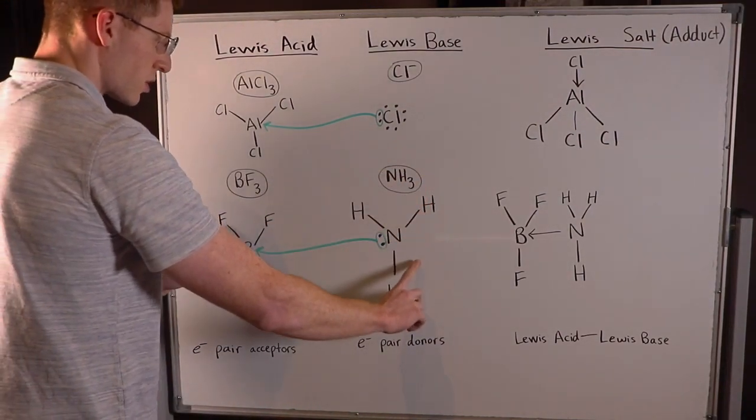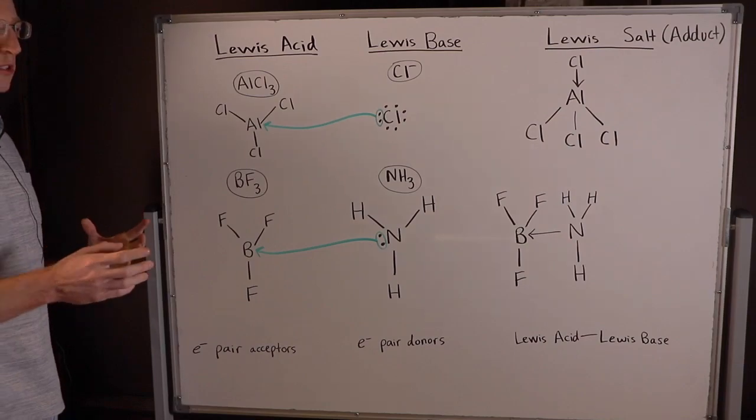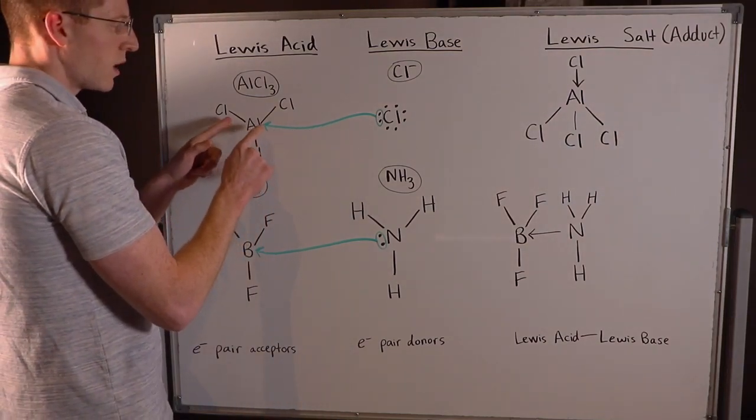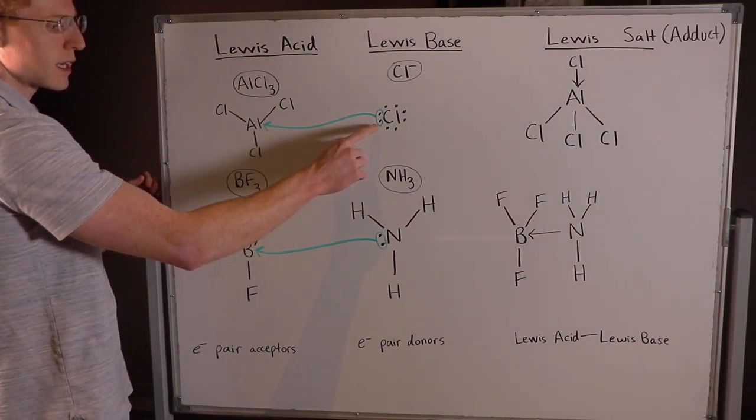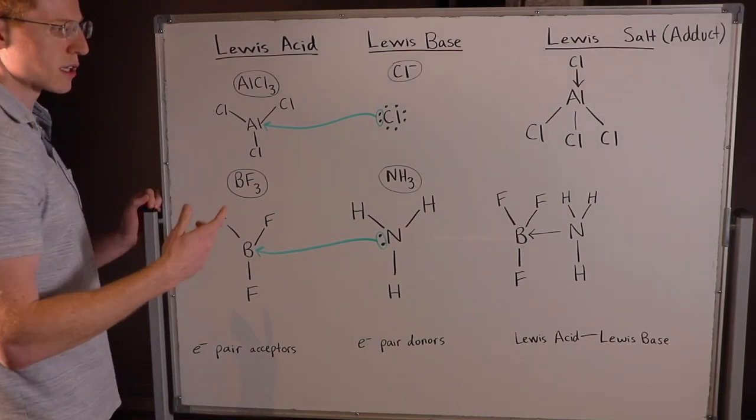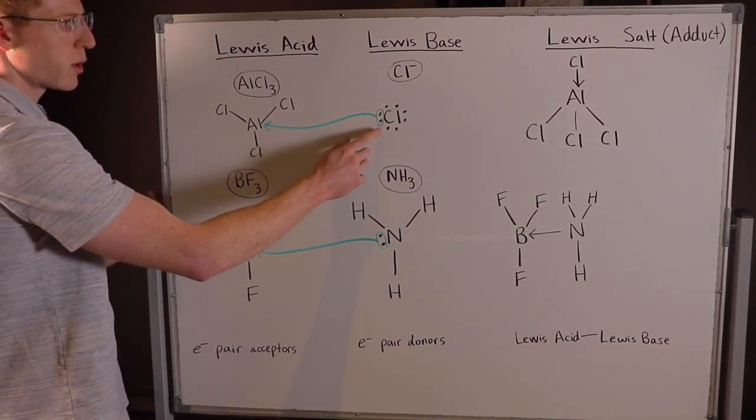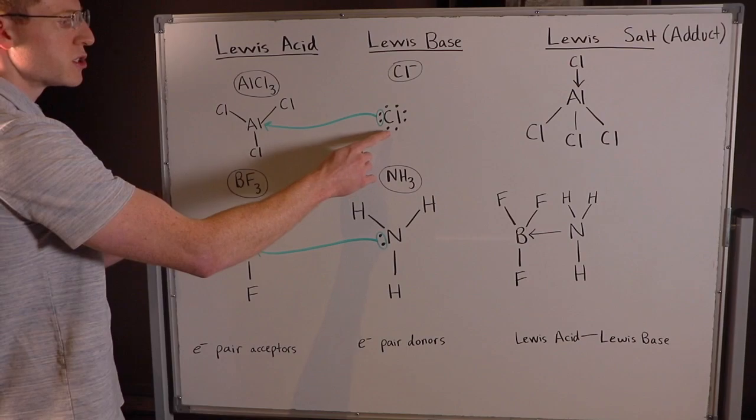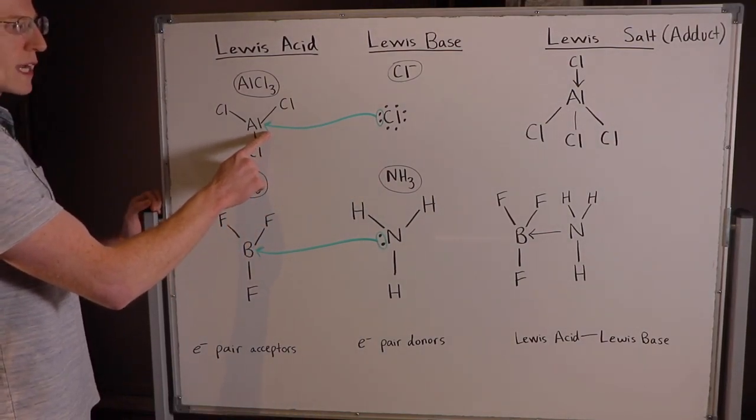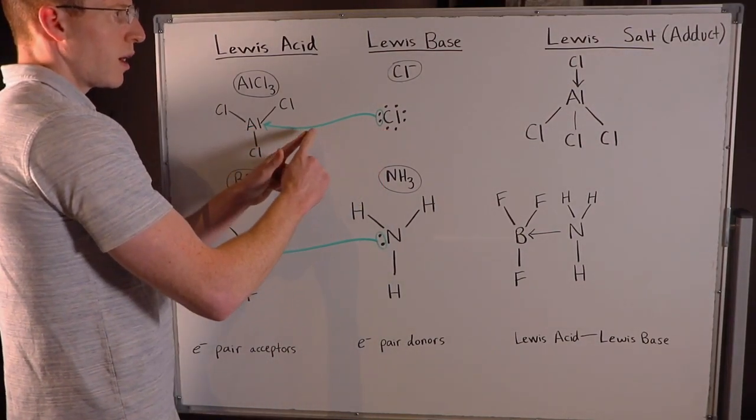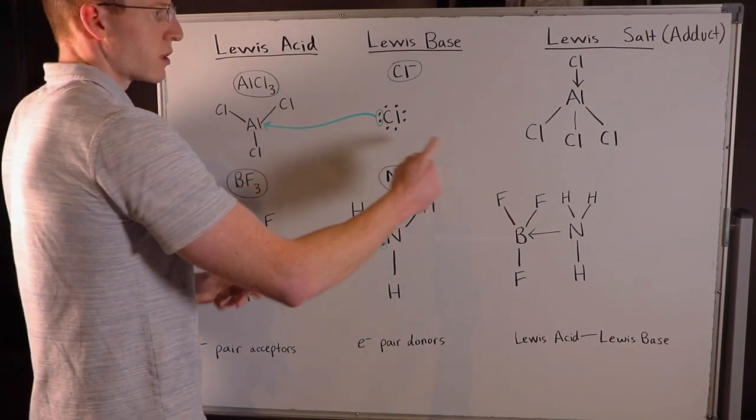You can see here that drawing the Lewis dot structures for the molecules are very useful in determining the location of unfilled octets and extra lone pairs of electrons on the central atom. And you can see here what happens. When a Lewis base donates electrons to a Lewis acid, they create a bond and they become an adduct or a Lewis salt.